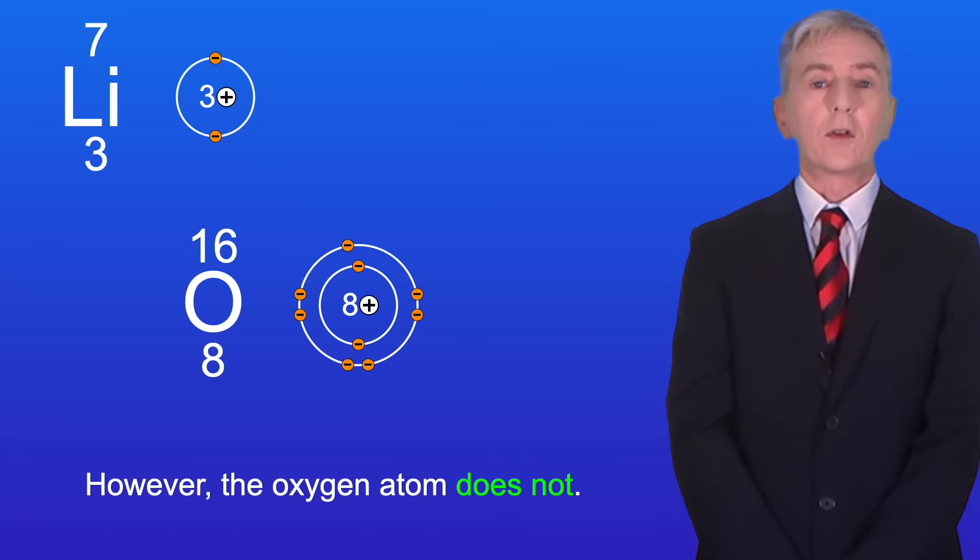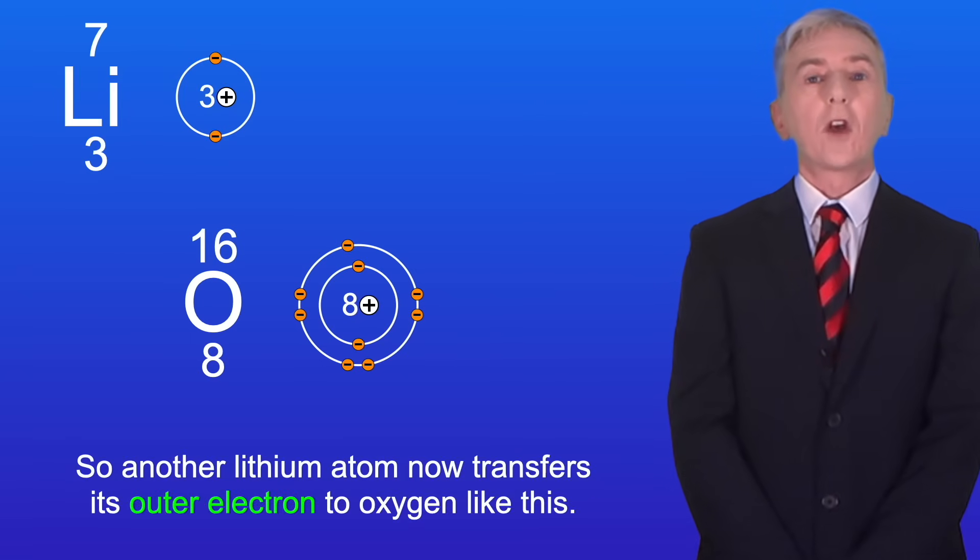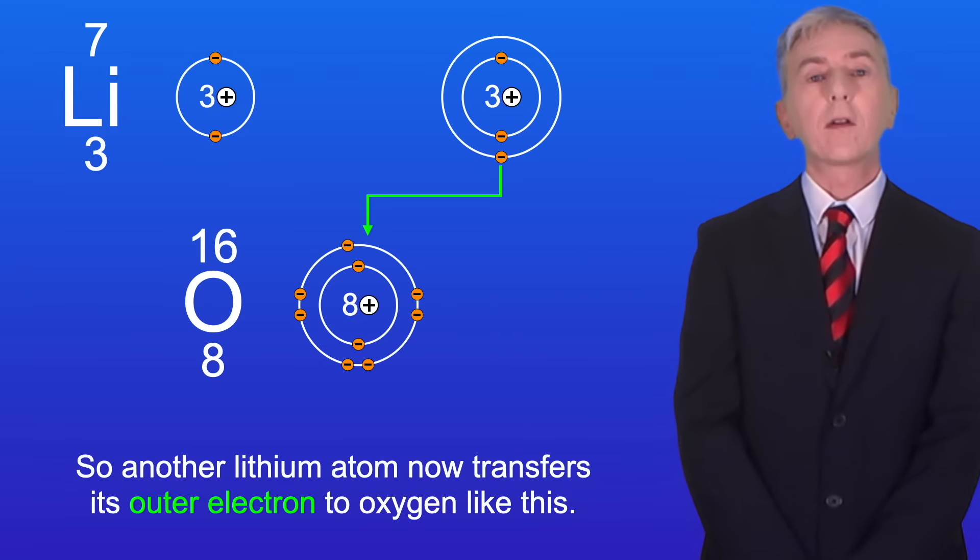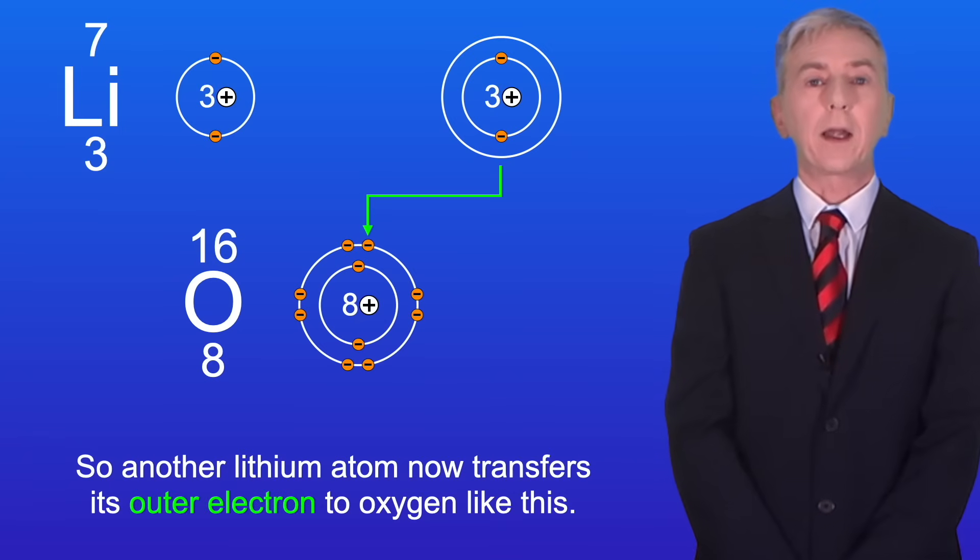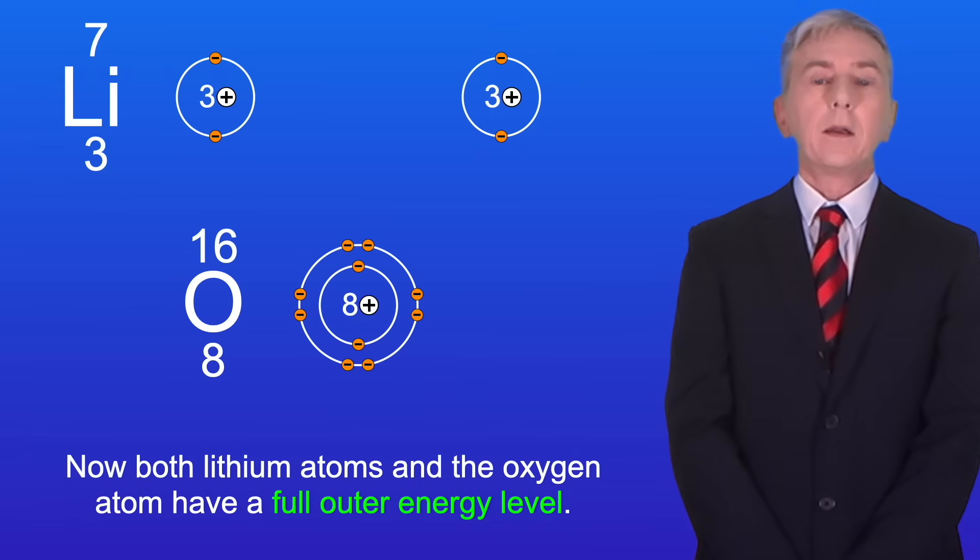However, the oxygen atom does not. Oxygen still requires one more electron. So another lithium atom now transfers its outer electron to oxygen like this. Now both lithium atoms and the oxygen atom have a full outer energy level.